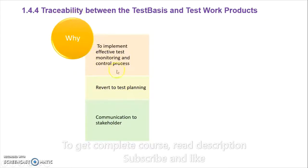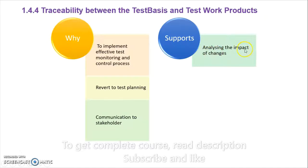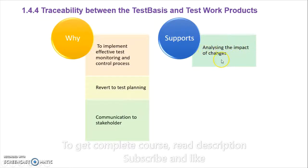Now for the support traceability provides: first is analyzing the impact of changes. Suppose we had six requirements and a new requirement comes in — we will know there is no traceability for that new requirement and can check what impact it will have on other things. Another example: if you have six test cases and one is updated — say a value changes from 10 milliseconds to 20 milliseconds — you can determine how many test cases are impacted and strengthen your test planning accordingly.